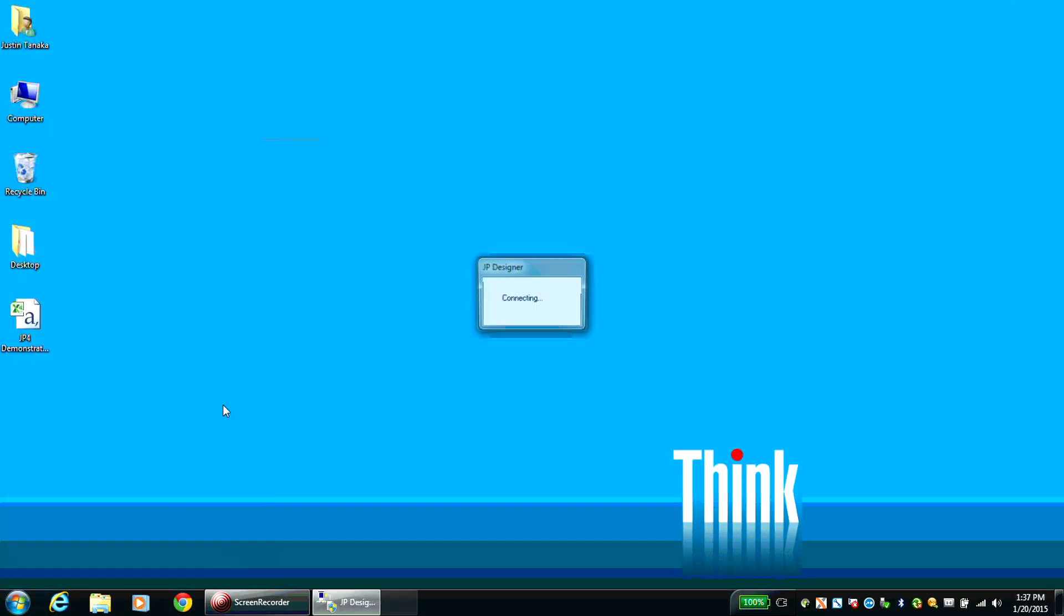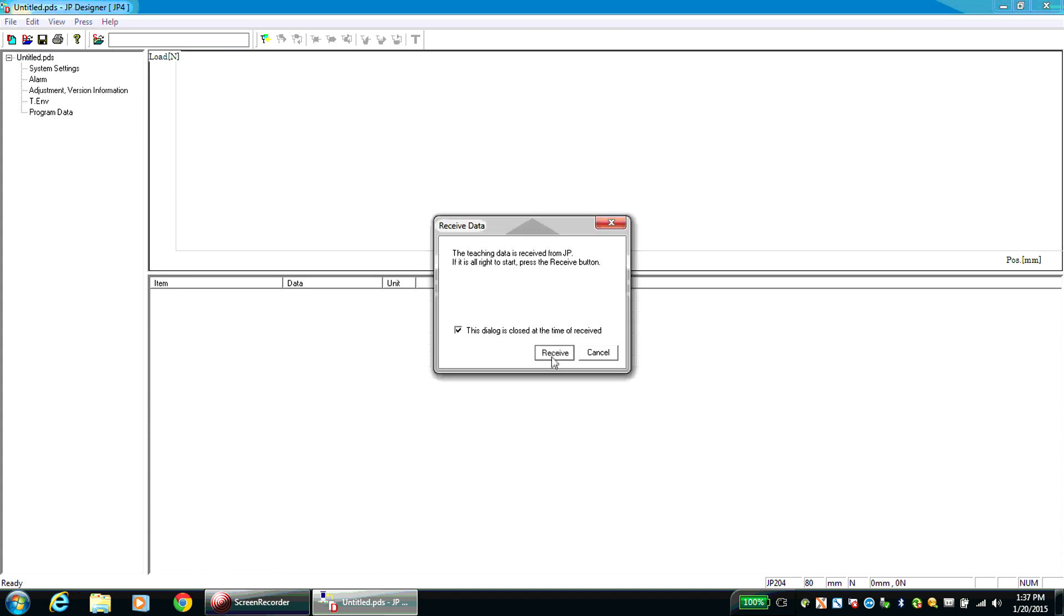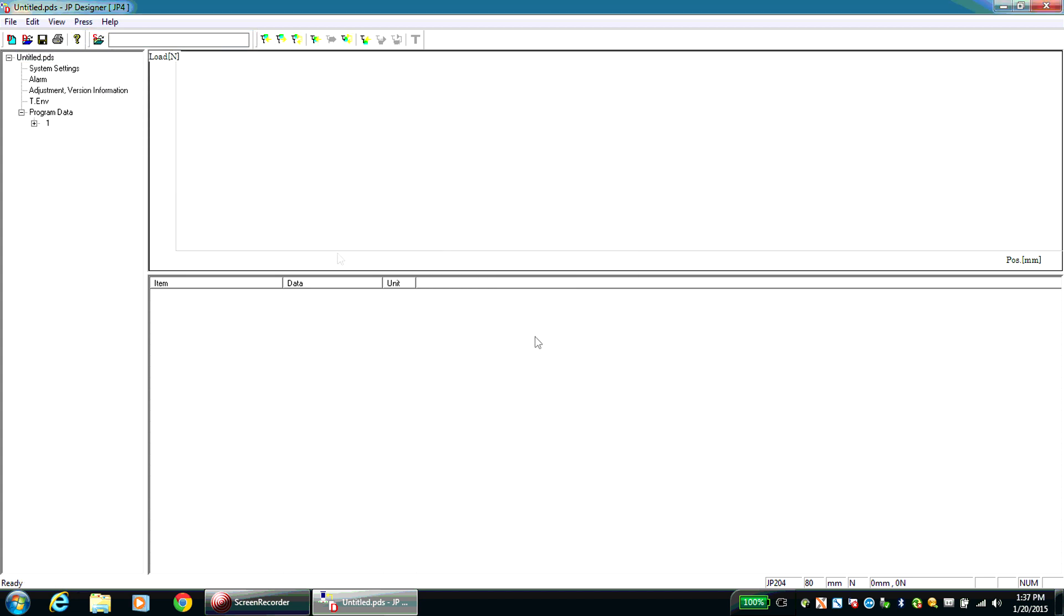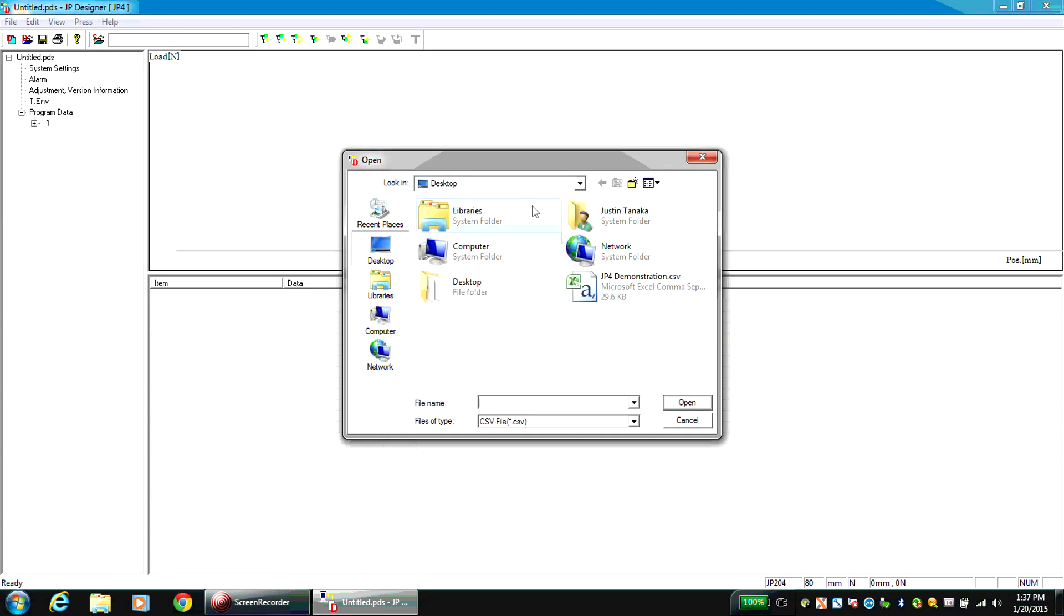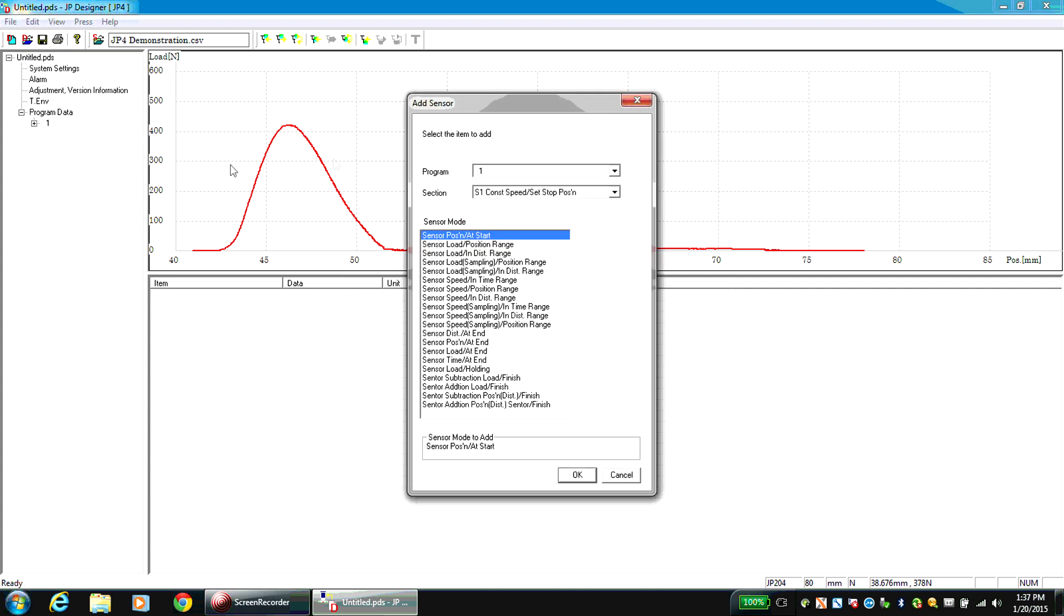Open JP Designer and click Receive Data from the Press drop-down menu. Once the Press Settings have downloaded, click Open Sampling File from the File menu. Locate the .CSV sampling file, and the Load Position Graph will appear in the top window. Click Add Sensor from the Edit drop-down menu. Select the program number and sensor type.